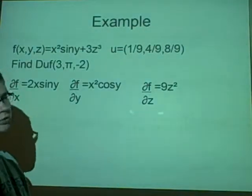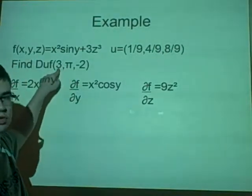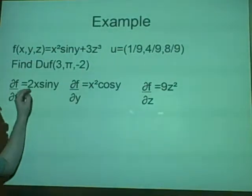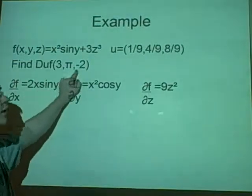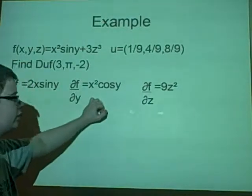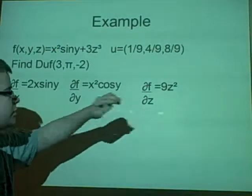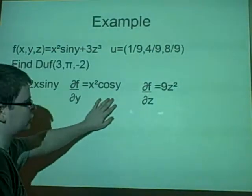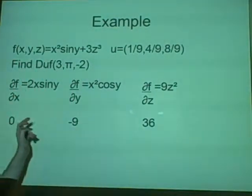Next what we want to do is we want to put our values that we had before, like ab. In this case, it's ab and c, so we put x is 3, y is pi, and z is minus 2. So we put these values in. This will become 0, because sin pi is 0. This will become minus 9, so we have 9 times cos pi, which is minus 1. And this over here will become 36, because 9 times 4. There we go, 0 minus 9, 36.